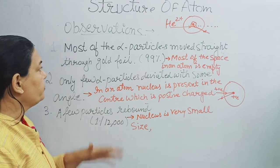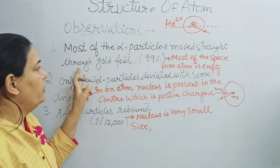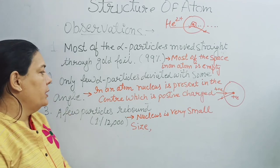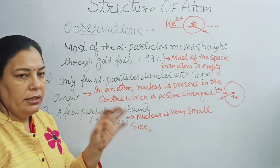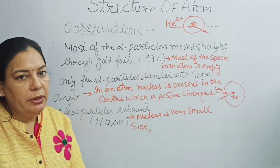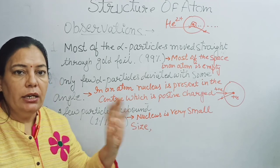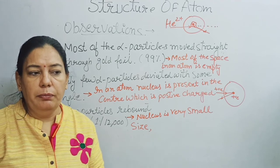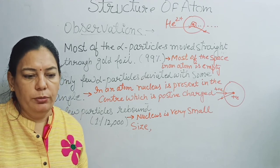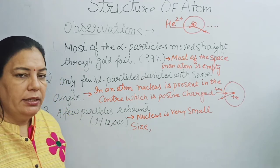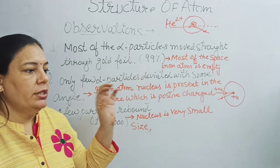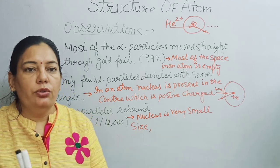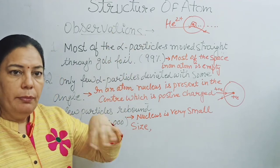Let us revise the conclusions again. On the basis of the first observation: most of the atom's space is empty. On the basis of the second observation: in an atom, the nucleus is present in the center and is positively charged. On the basis of the third observation: the nucleus is very small in size. These are the three conclusions Rutherford drew from his experiment.